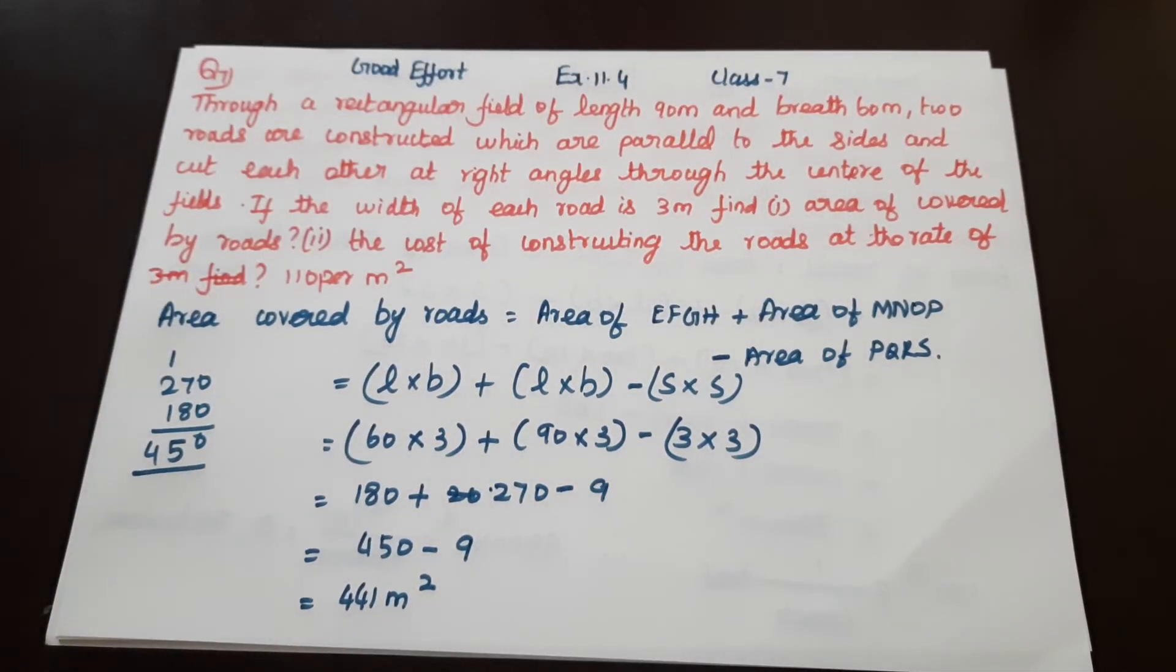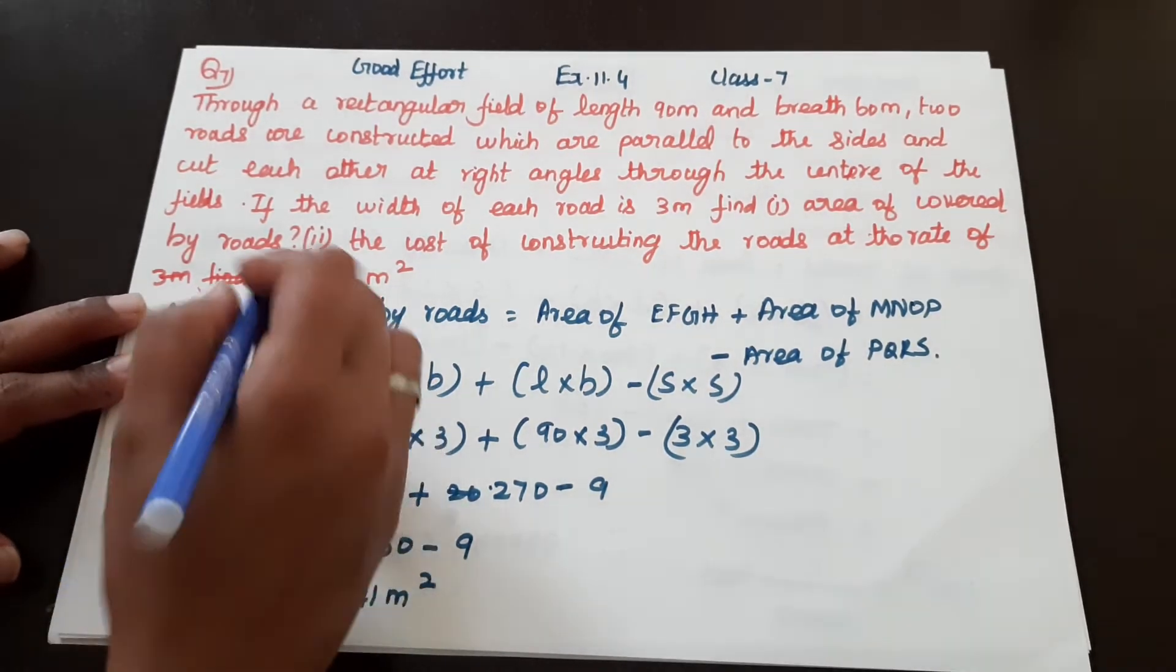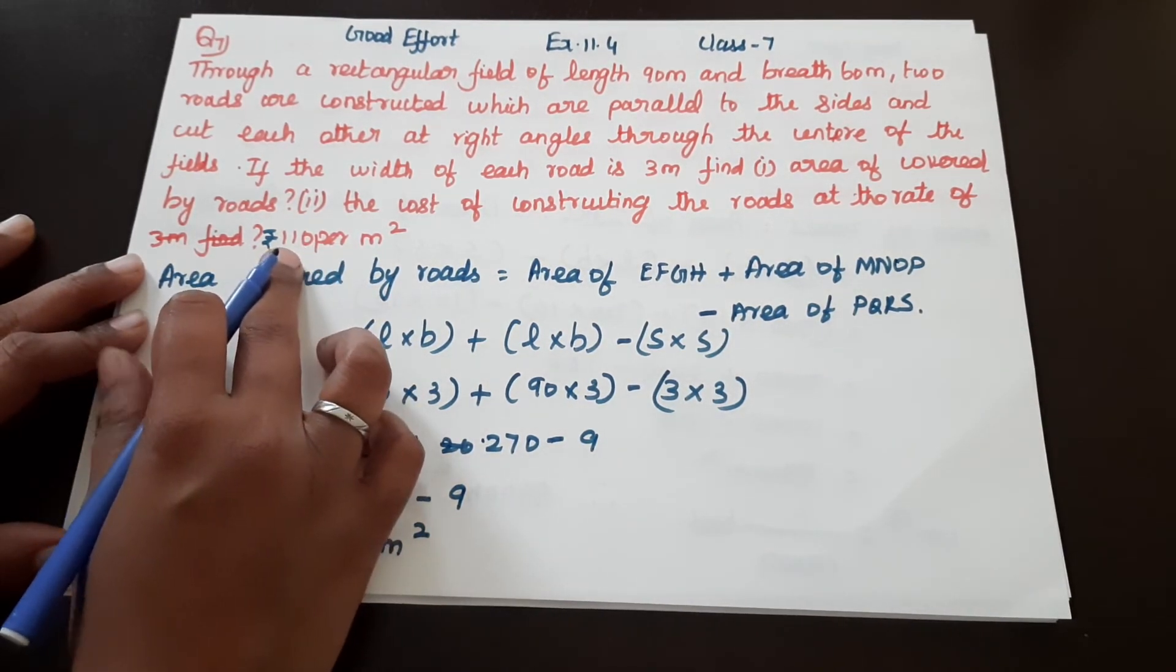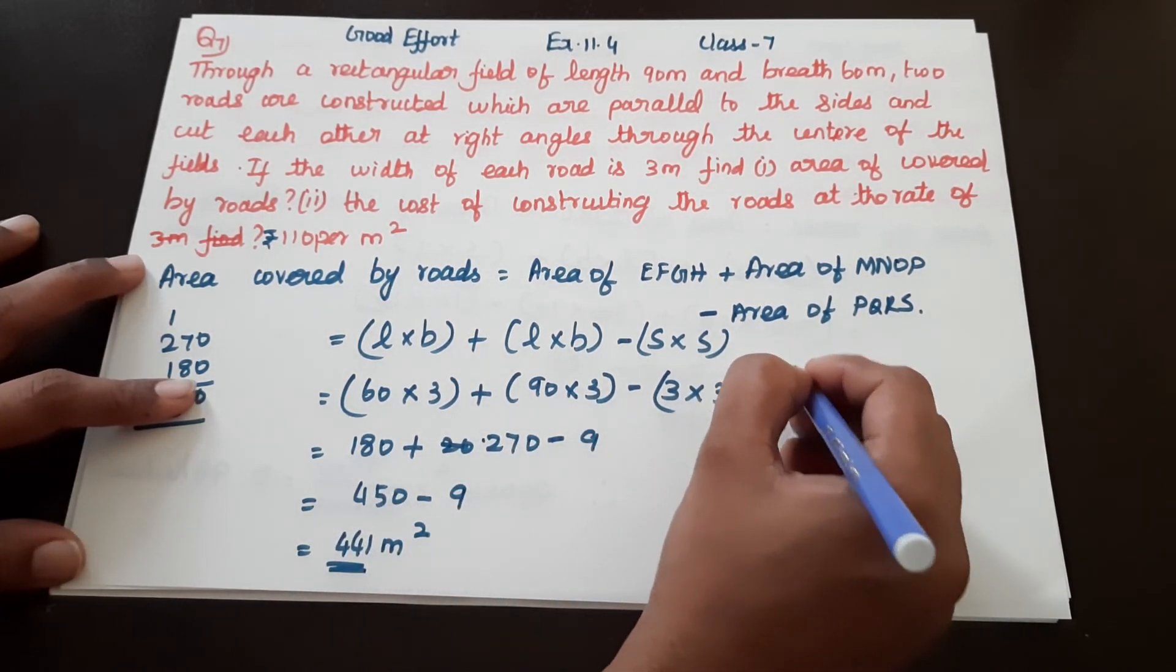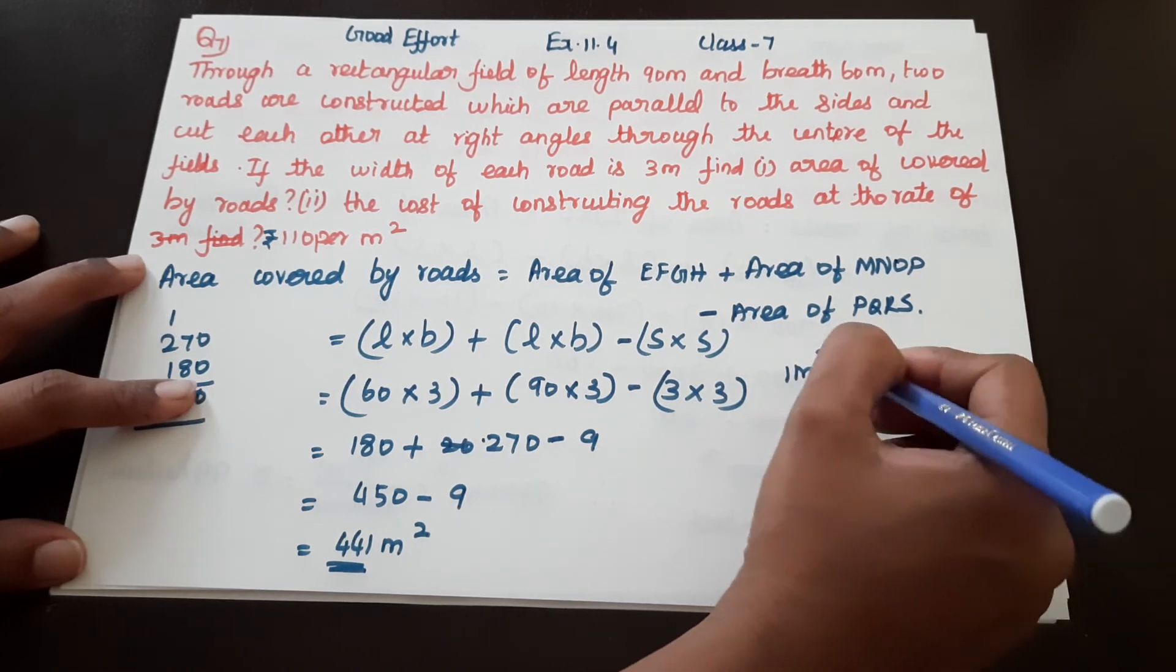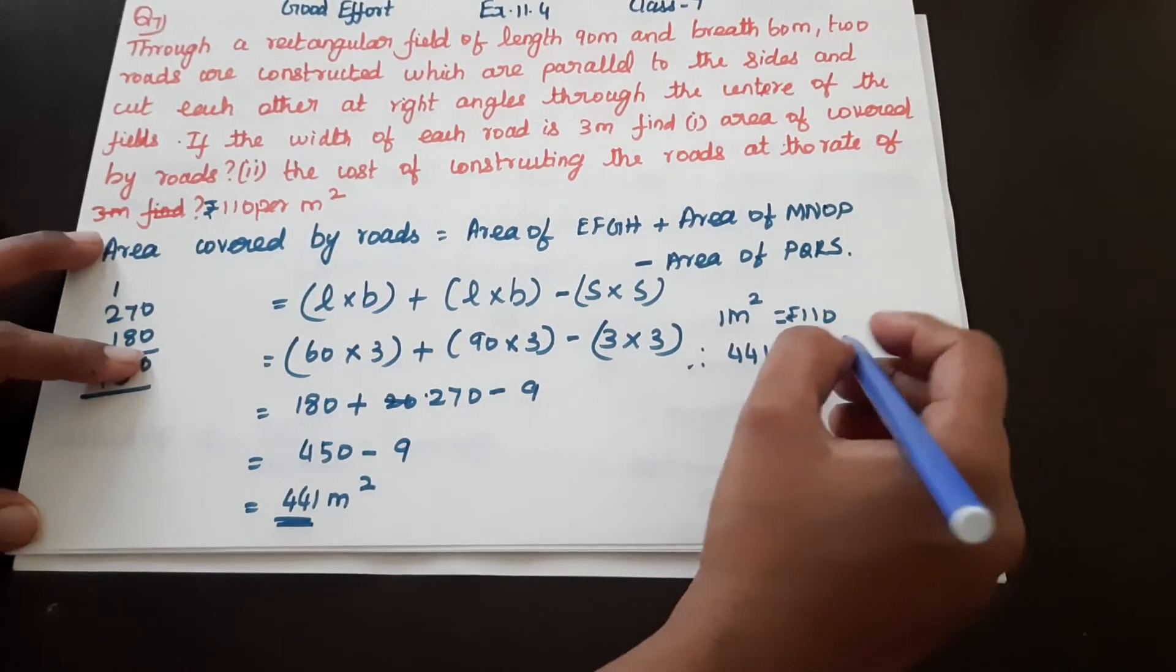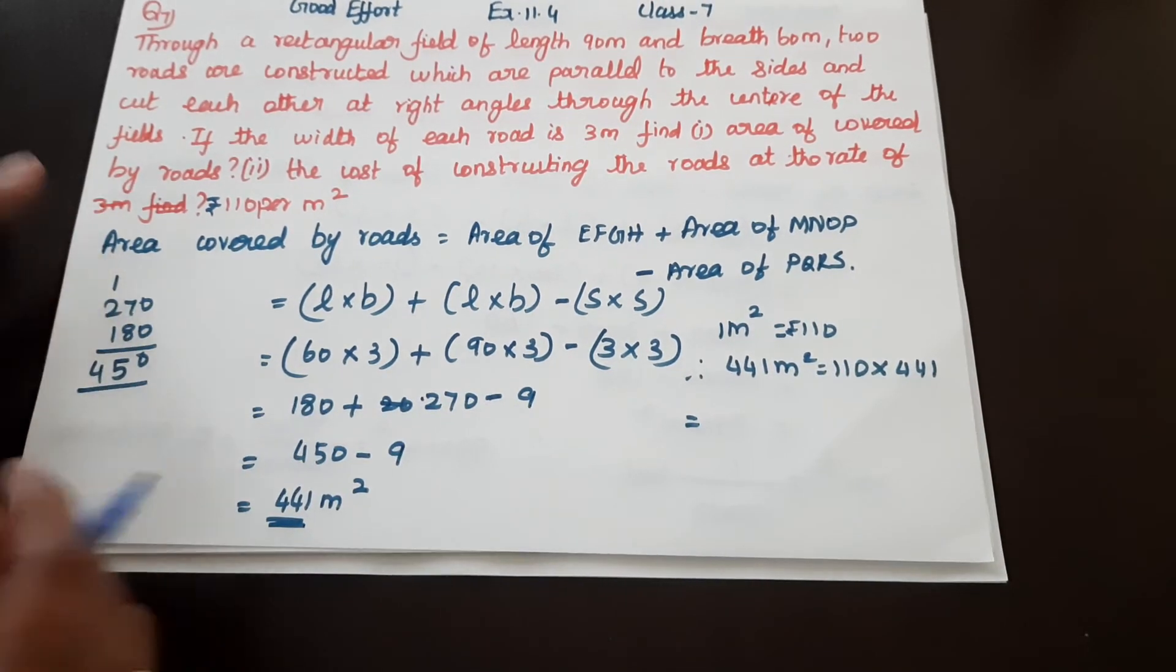Okay, so the cost of constructing the roads at the rate of 110 per meter squared. Rupees 110 per meter squared. So, 1 meter squared is 110 rupees. Therefore, 441 meter squared is equal to 110 into 441.